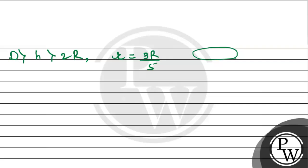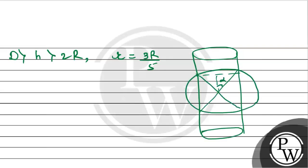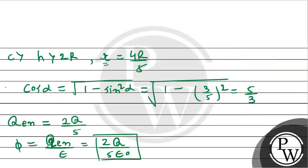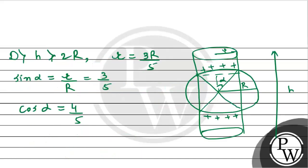Now let's draw the diagram for Option D. We have a spherical conductor with charge distributed on it, and the cylinder inside makes angle alpha. Since h is greater than 2r, the height of the cylinder spans the sphere. Small r is the radius of the cylinder. From the figure, sine alpha equals r divided by capital R, where r equals 3R/5. Substituting, r cancels and we simply get sine alpha equals 3/5. Similarly, cosine alpha equals 4/5.